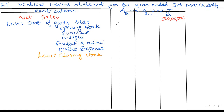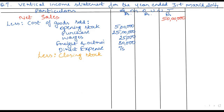Let us now write the amounts. Opening stock: 5 lakh. Purchases: 25 lakh. Wages: 25,000. Freight and octroi: 80,000. Direct expenses: 75,000. And closing stock on the credit side, which is given as 7 lakh.